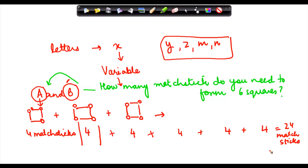However, there is an interesting pattern here. What is the pattern? B realizes that for every square, you require four matchsticks. Right?